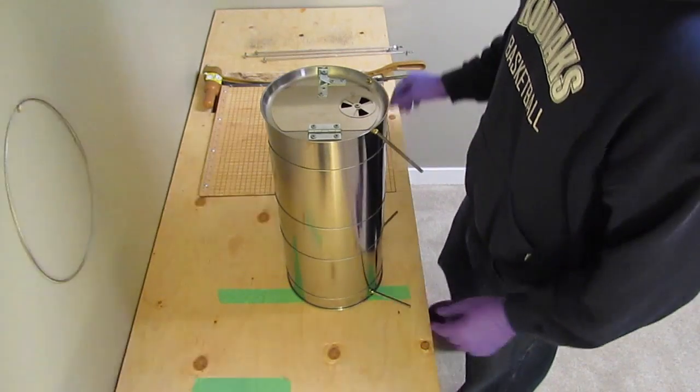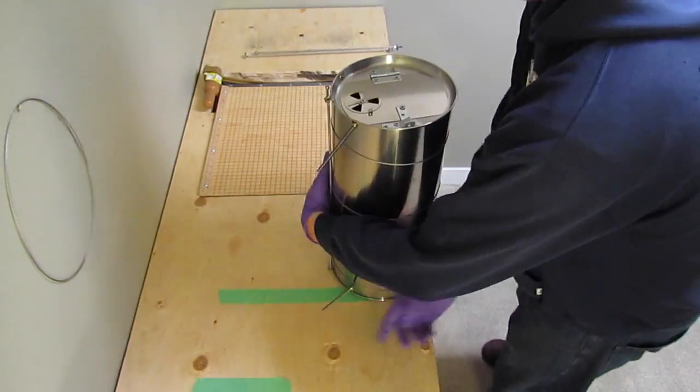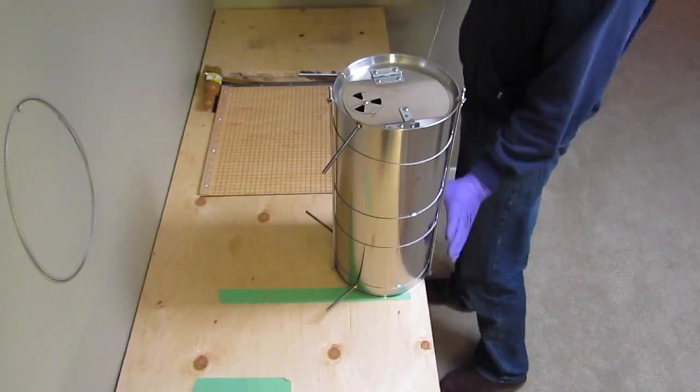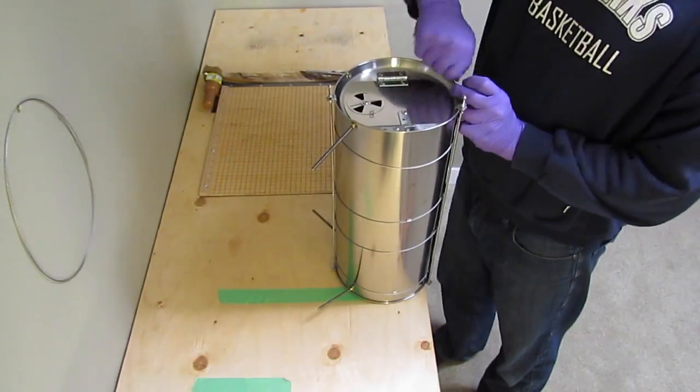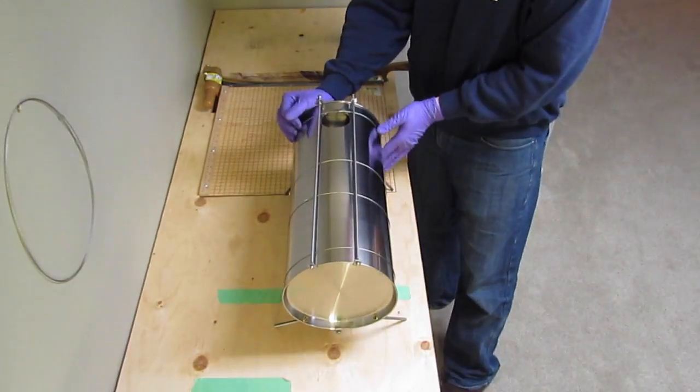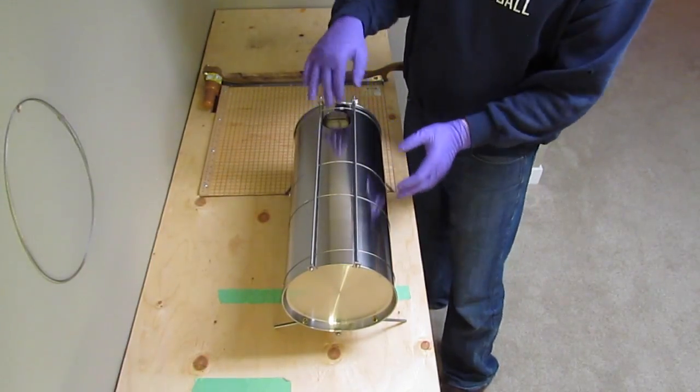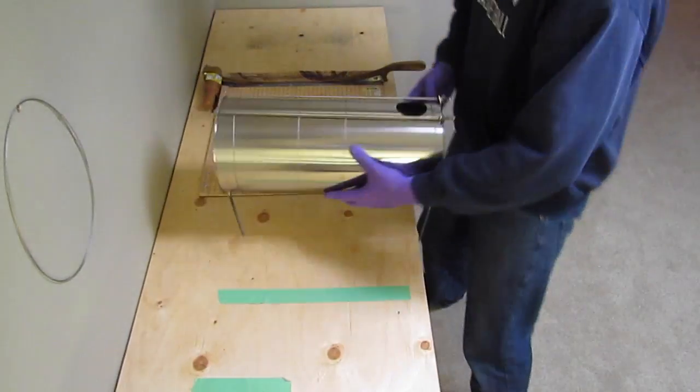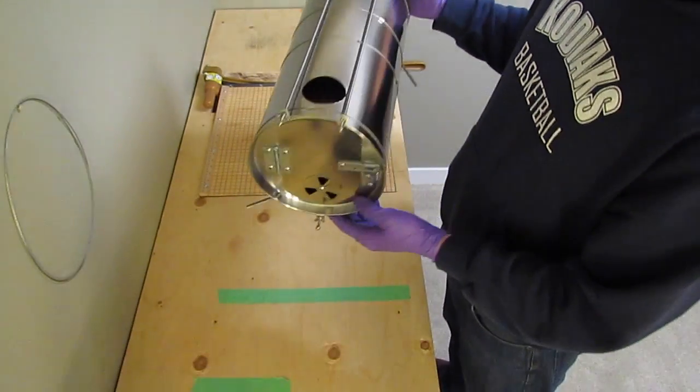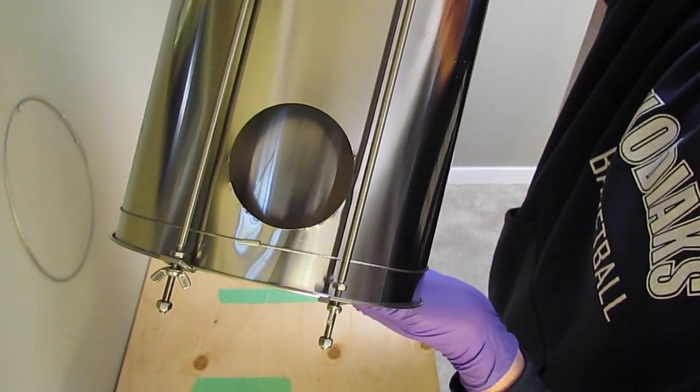And now you want to put your rods on. So there you have it. The baffle's installed. You can see the partition there in front of the chimney.